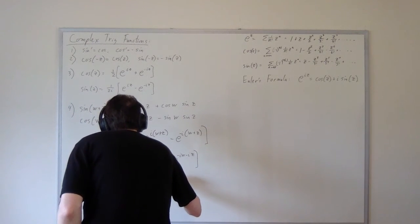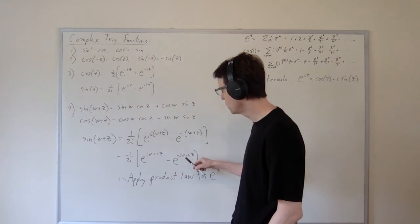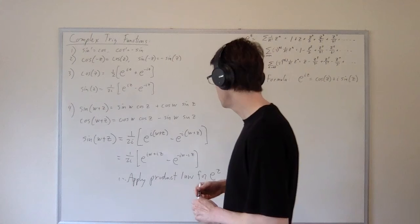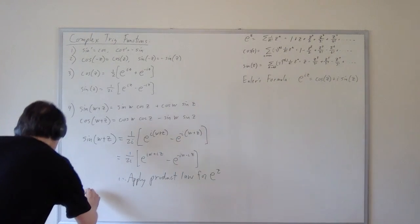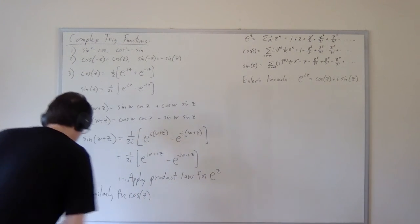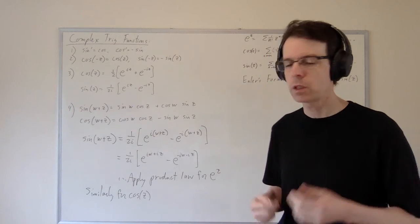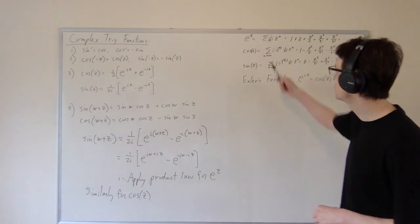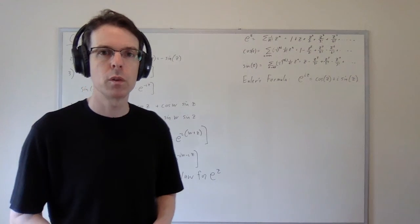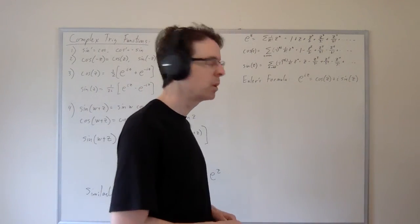So you just have to apply the product law for e to the z. Because here we have e to a sum, and here we have e to a sum. And so we can just expand those as products and simplify. And so I'm not going to go through the details. And similarly for the cosine. So those are all of the basic properties of the exponential and trig functions that we're going to do here. Hopefully I've convinced you that the exponential function e to the z and the trig functions cos z and sine z as defined by these power series really are good analogs of the familiar real value exponential and trig functions. And as we go forward, I hope that you'll learn to use your intuition without skipping too many steps.